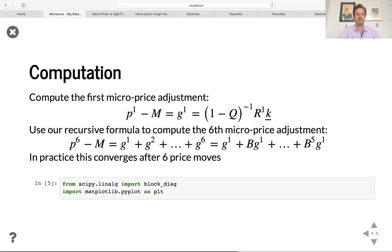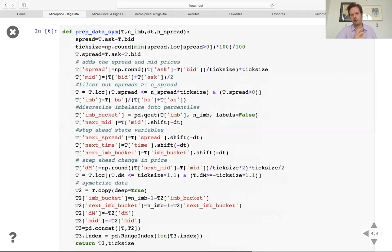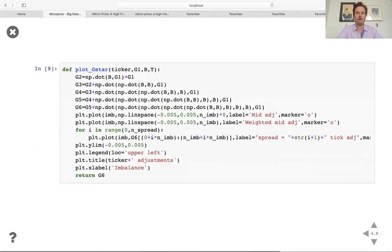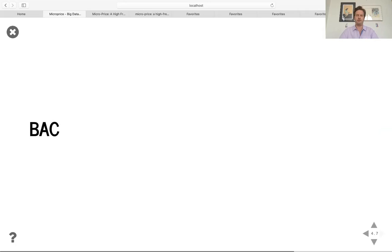Now, so as you can see, the first thing we're going to look at is the G1, the first order micro price adjustment. And then we recursively use our formulas to compute the six micro price adjustments, which is given here below. And that's what we're going to be focusing our attention on. Now what I have here is the code that processes the data. Here I have the code that estimates the transition probability matrices. And here I have a code that essentially plots the micro price adjustments.